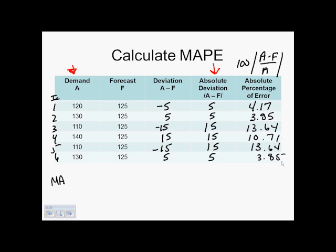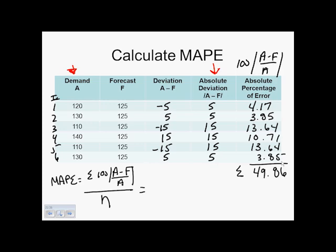For the mean absolute percentage error, I take the sum of 100 times the absolute value of actual minus forecasted demand divided by actual, then divide by N. Summing the last column — 4.17, 3.85, 13.64, 10.71, 13.64, and 3.85 — gives 49.86. Dividing by six time periods gives an answer of 8.31.